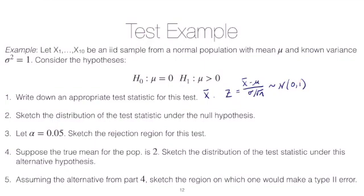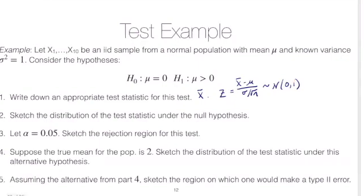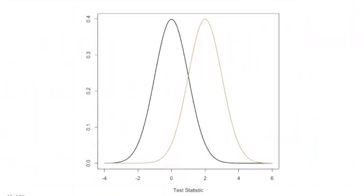So it would be centered at 0 and with variance 1. So I've plotted that here. So this here is our test statistic z. This is the distribution of z.